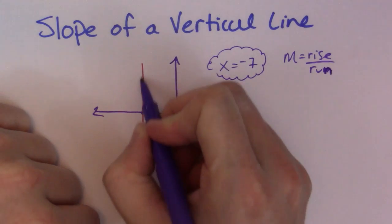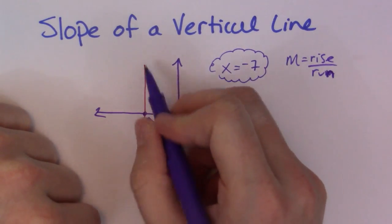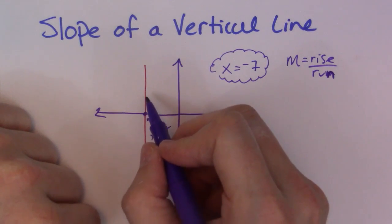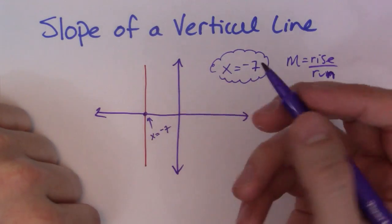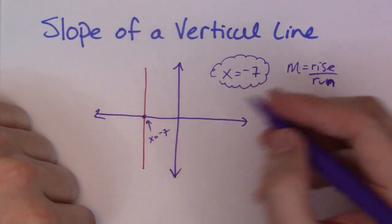So if I look at this guy, it's rising. Really, I don't know how much the rise here because I don't know where to stop. But the run, it doesn't run at all. So let's just say for example the rise, I say, well okay, I rise 5 units.